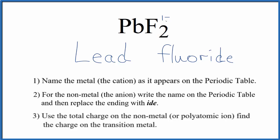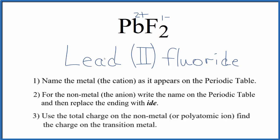If we have two fluoride ions, each one is 1 minus, then 2 times 1 minus equals 2 minus. So the lead has to be 2 plus. We write Roman numeral II in parentheses. This is the name for PbF2: lead(II) fluoride.